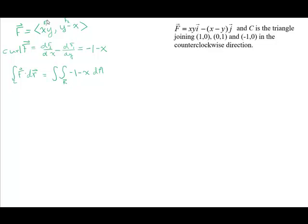So let's go ahead and draw our region over here to the side. So we're going from the point (1,0) to (0,1), (0,1) to (-1,0), and then we go across here.